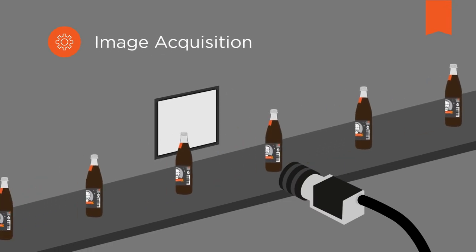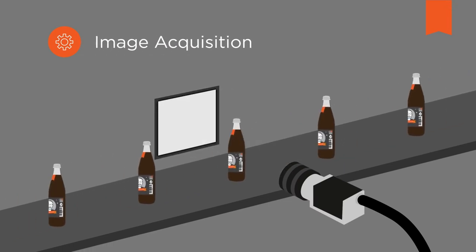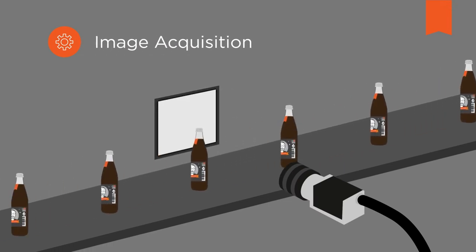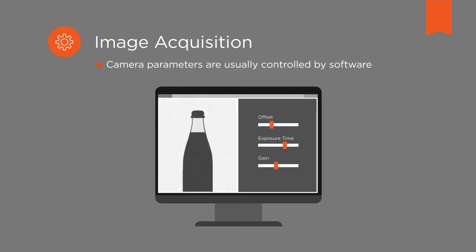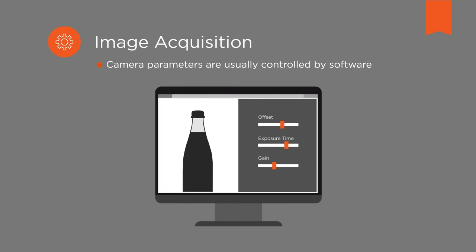Even when preparing for image acquisition, software plays a role. Camera parameters such as the length of the exposure time or gain and offset are usually controlled by software.